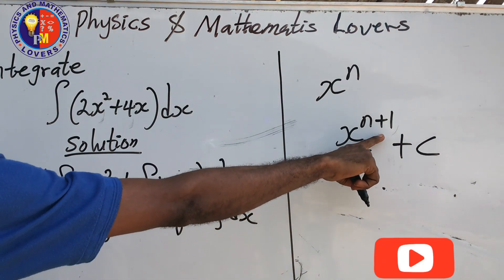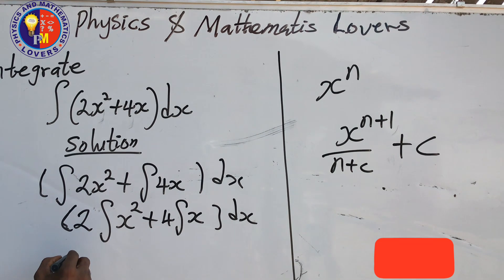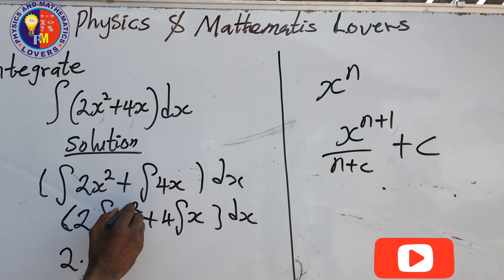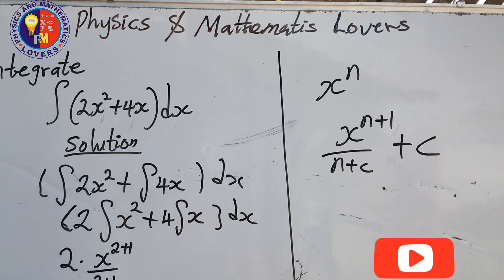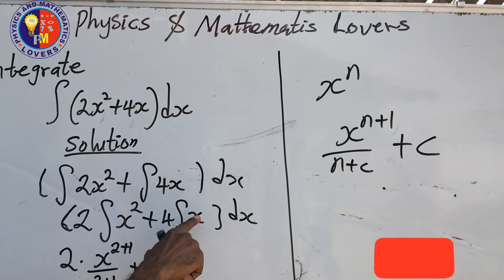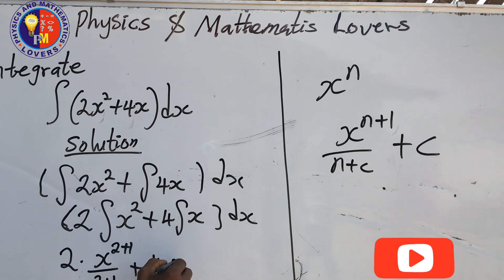We remove this integral value. I'm going to have 2 then x, this is one multiplication. We have x to the power of 2, that is n, 2 plus 1 all over 2 plus 1, then plus this 4 here. The power of x here is one.